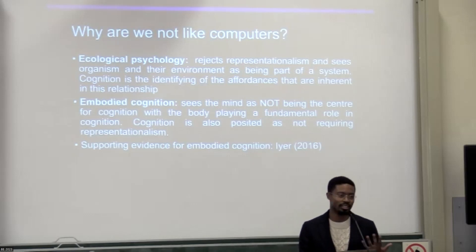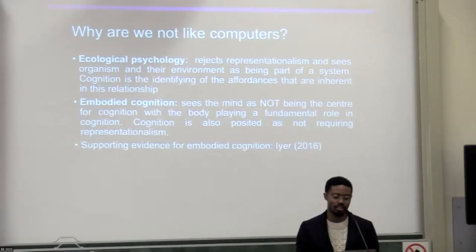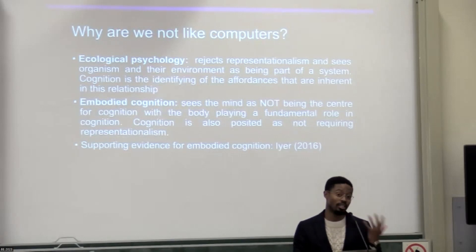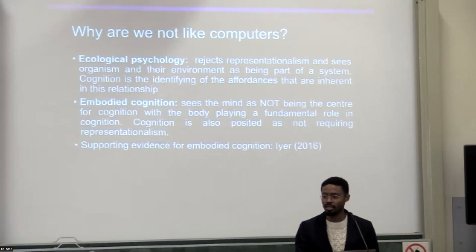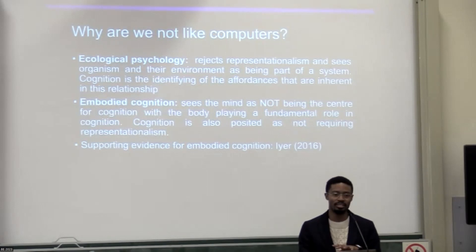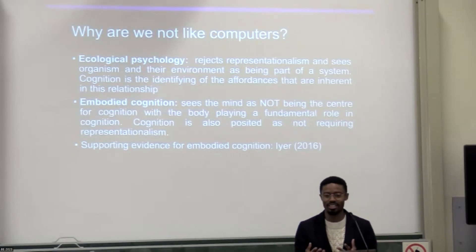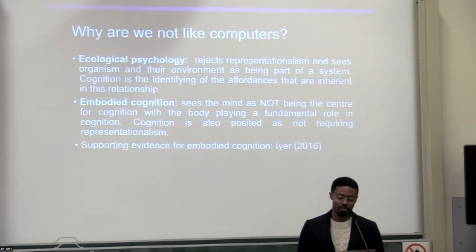Embodied cognition is influenced by ecological cognition. Embodied cognition sees the mind as not being the centre of cognition, as posited by cognitivists, but instead with the body playing a fundamental role in cognition. This means that representations are not necessary for cognition to occur.